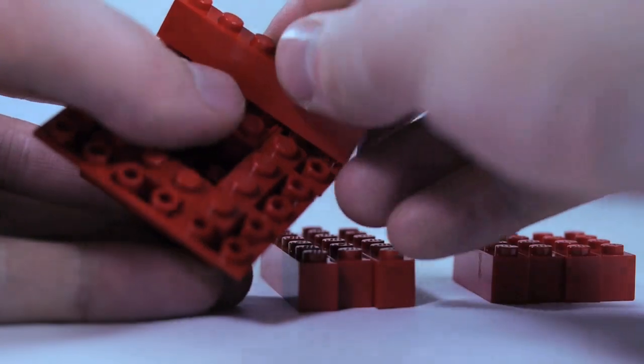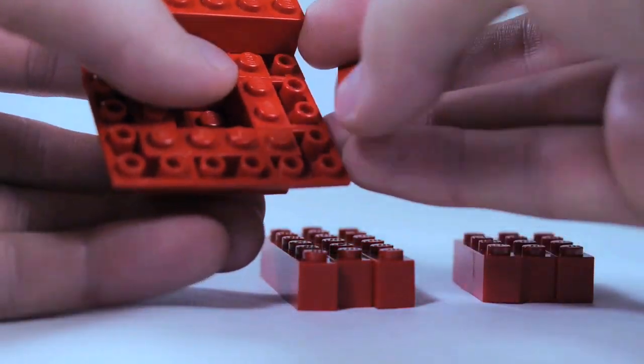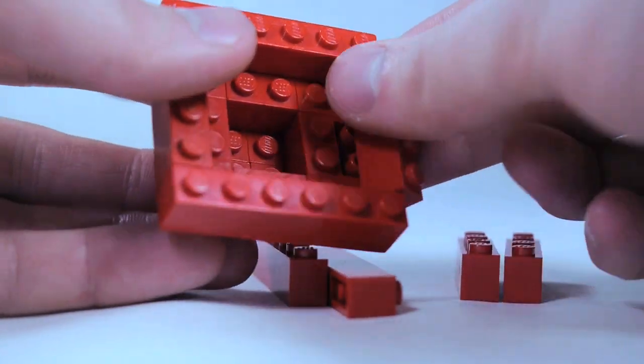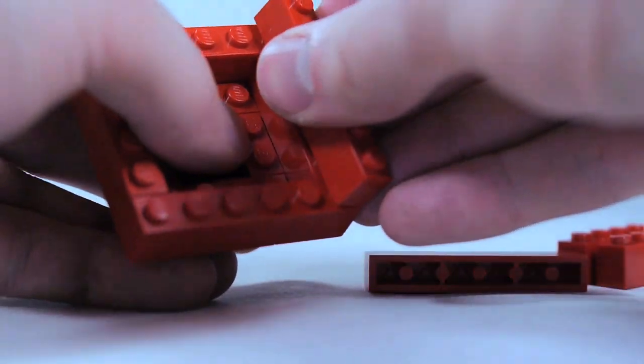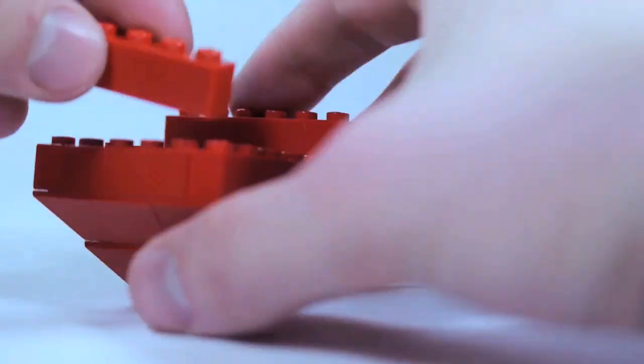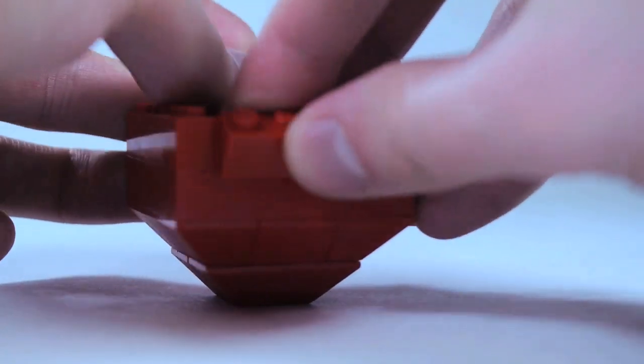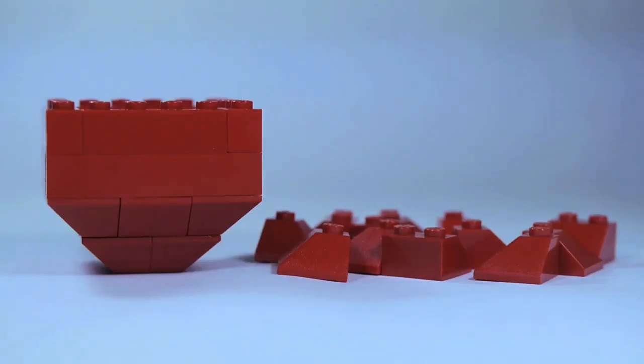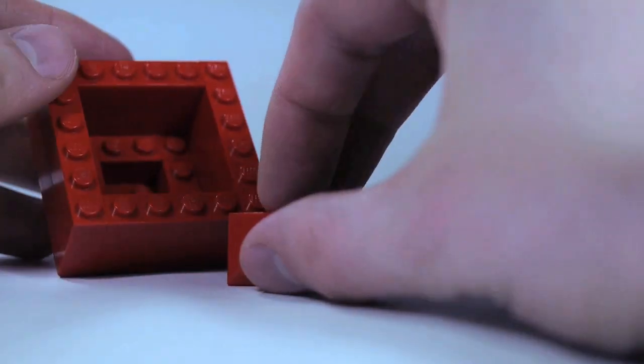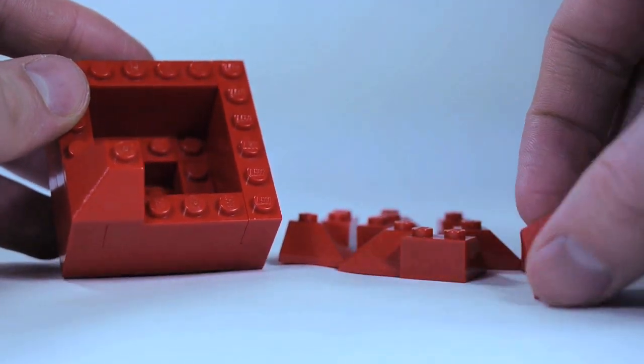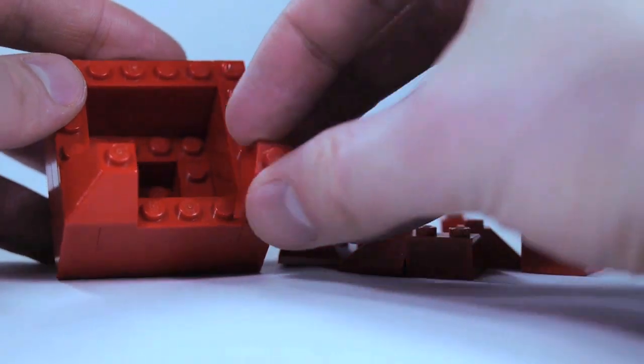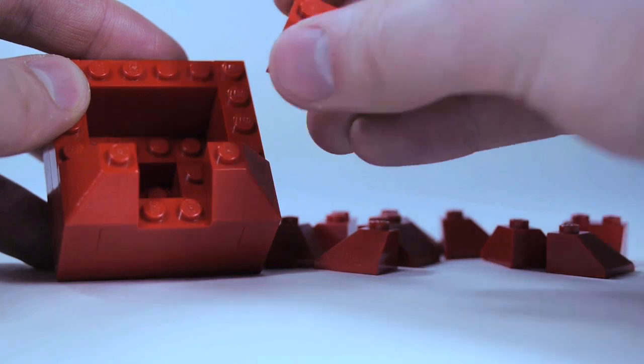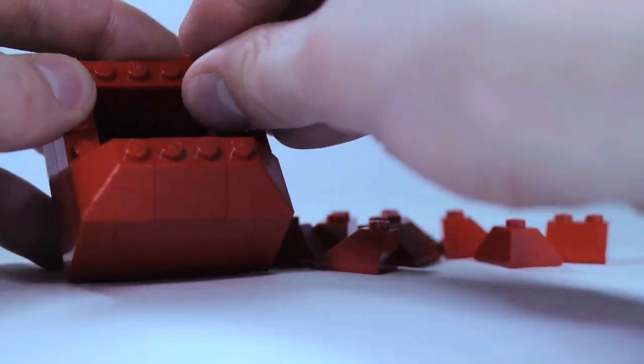Next we're going to use some one-by-sixes and one-by-fours to build up two layers on the balloon. I'm going to finish off the top by closing it up with the opposite of what we did on the bottom. So two-by-two downward corner slopes and two-by-two just downward regular slopes. All in red, of course.